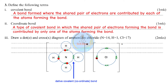When the ammonium ion reacts with a chloride ion, an ionic bond forms between the positively charged ammonium ion and the negatively charged chloride ion. This is the diagram representing bonding in ammonium chloride.